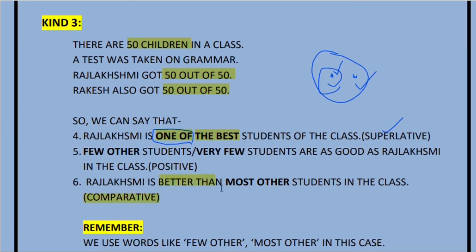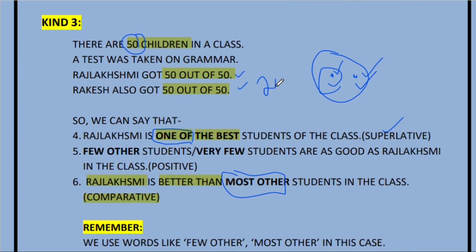For the comparative degree in kind three, we use 'better than.' But we cannot say 'better than all other students' because Rakesh is also there. Among 50 children, two got 50 out of 50 and 48 got less. So we write: 'Raj Laxmi is better than most other students in the class' — she is better than most, but not all.